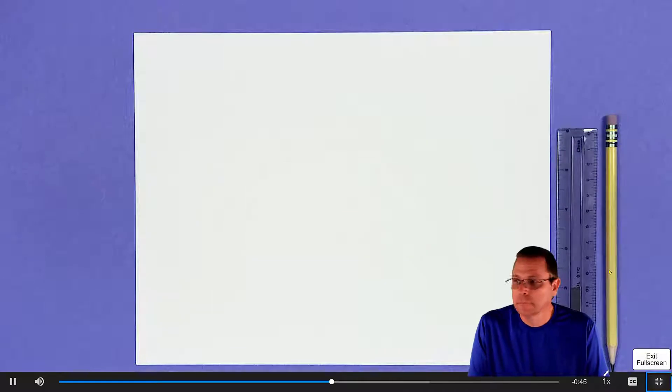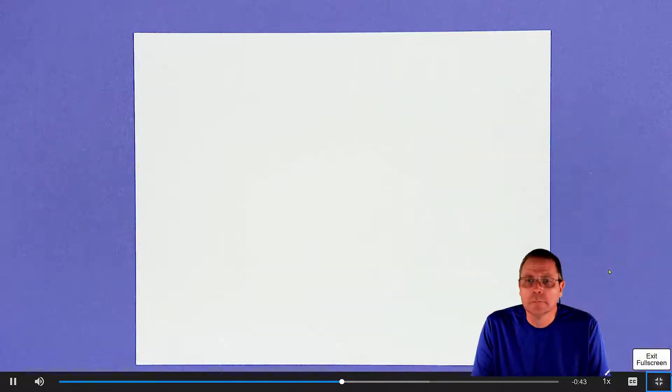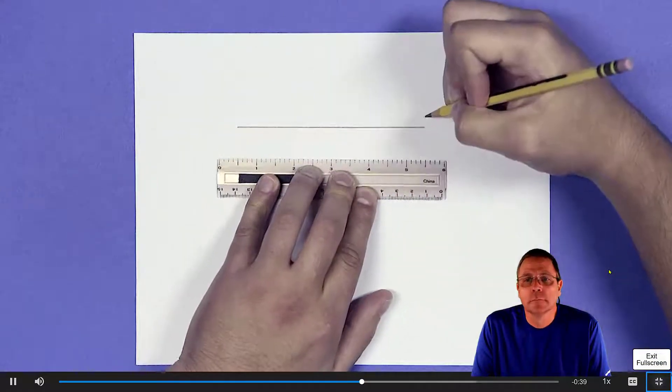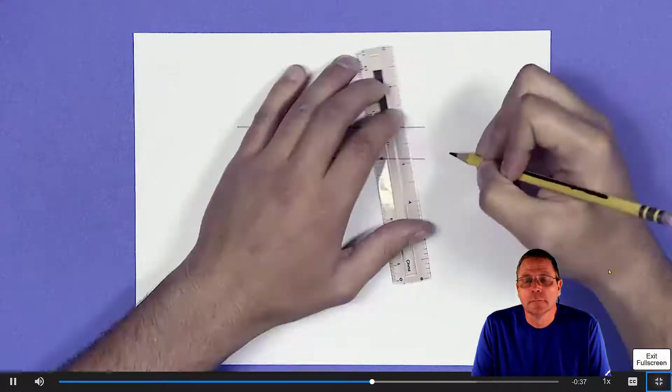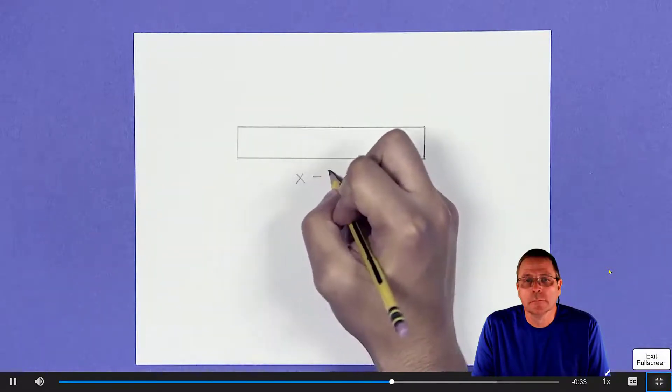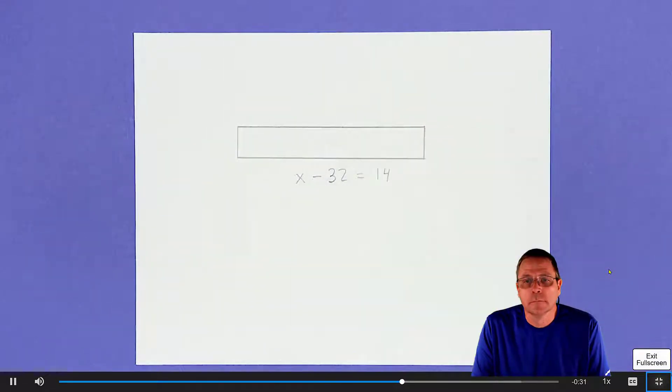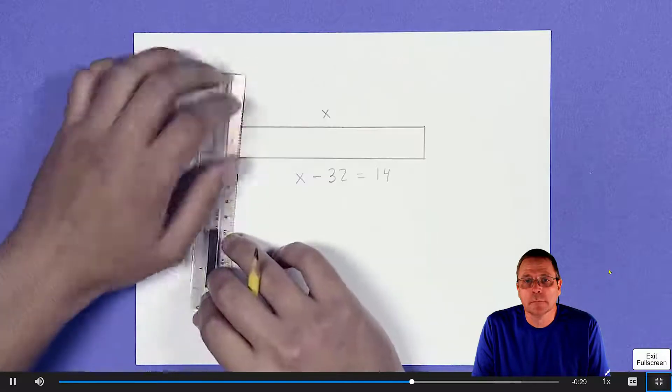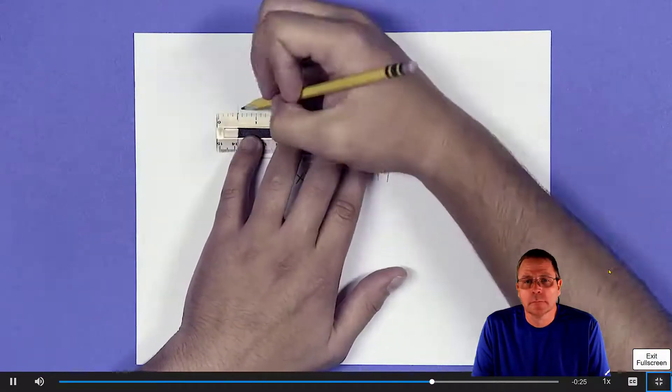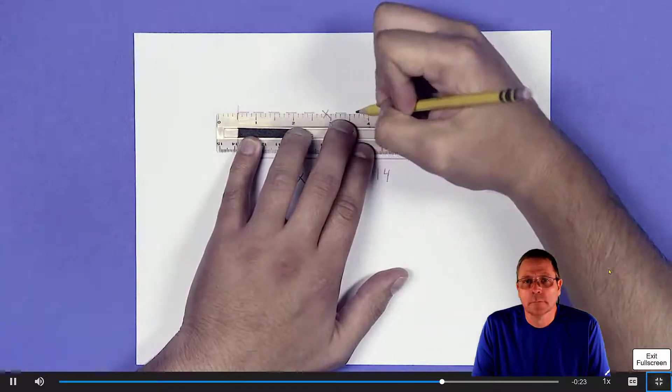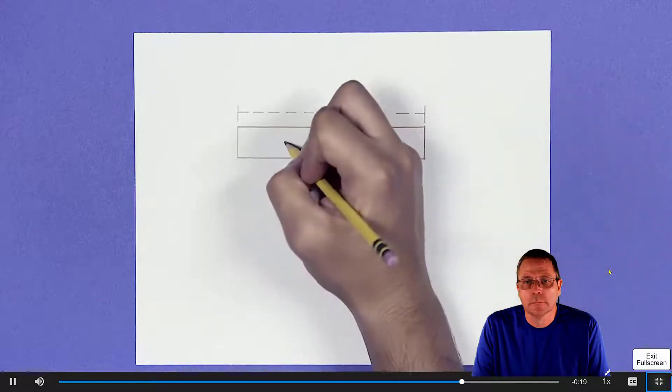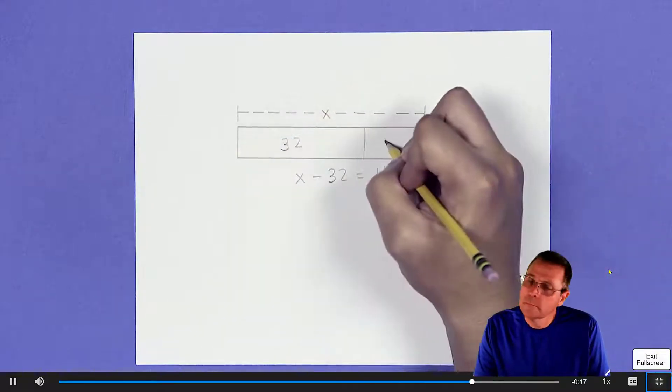Let's try another. Use a bar diagram to solve x minus 32 equals 14. The total length of the diagram represents the original amount, x. Label the bar to show the original amount. Divide the bar into two sections to show the known values, 32 and 14.